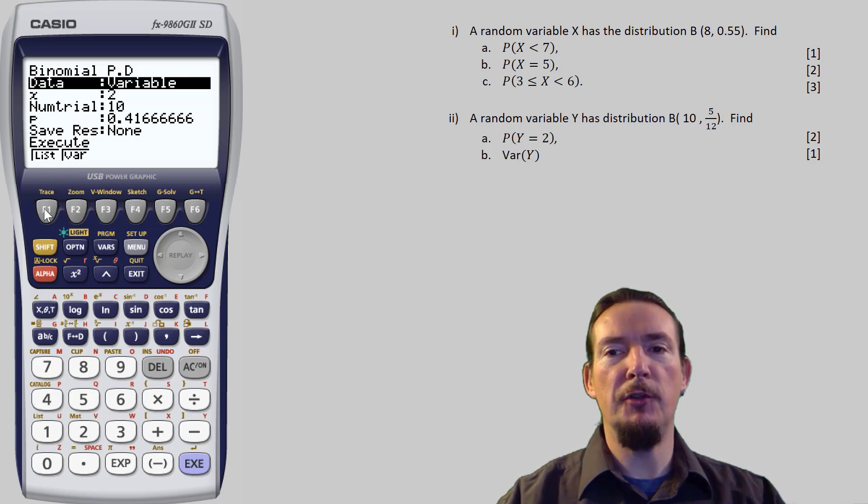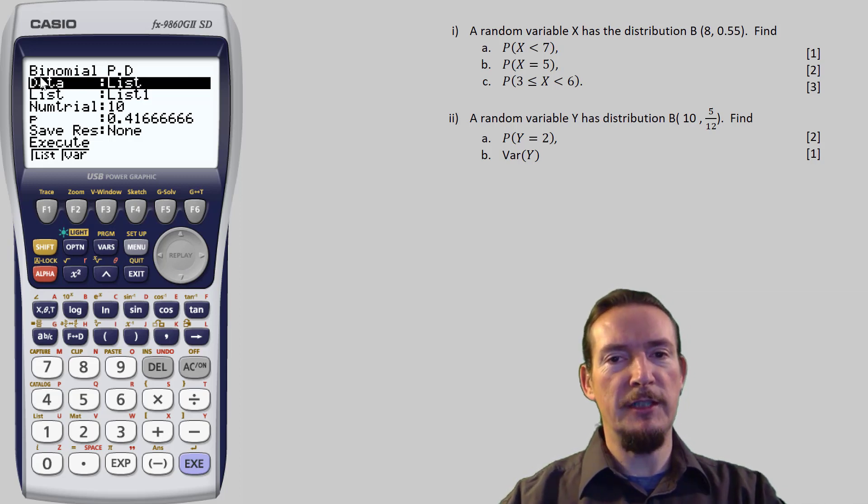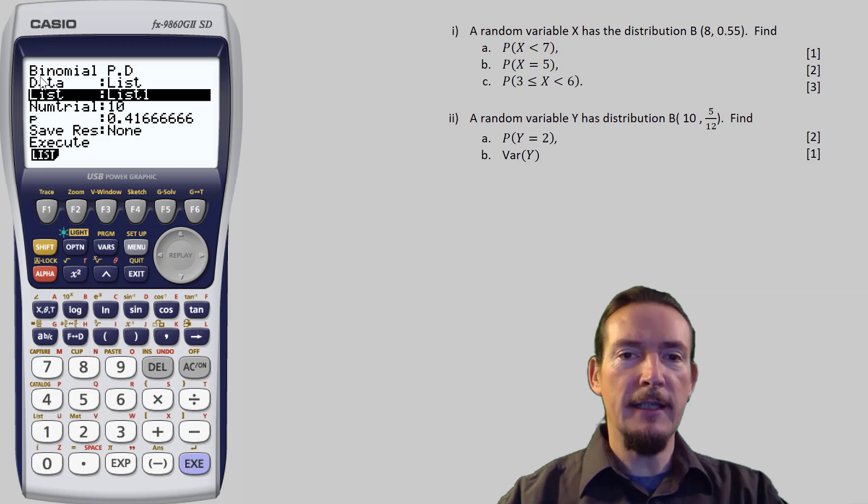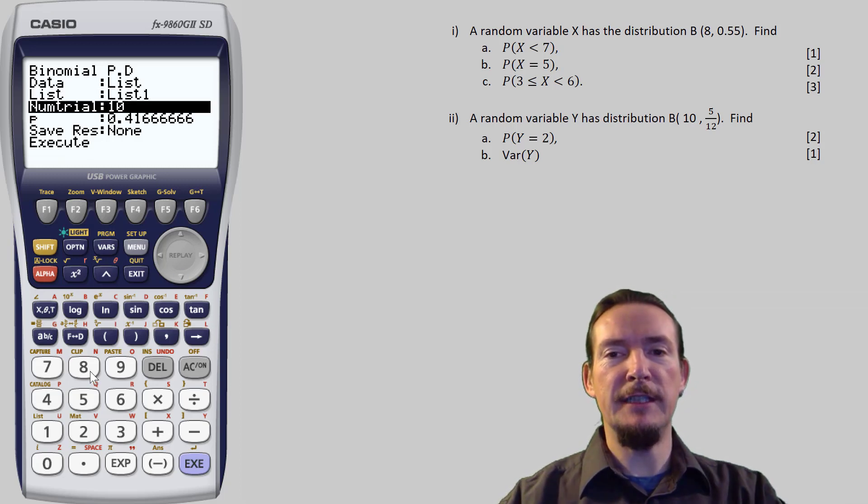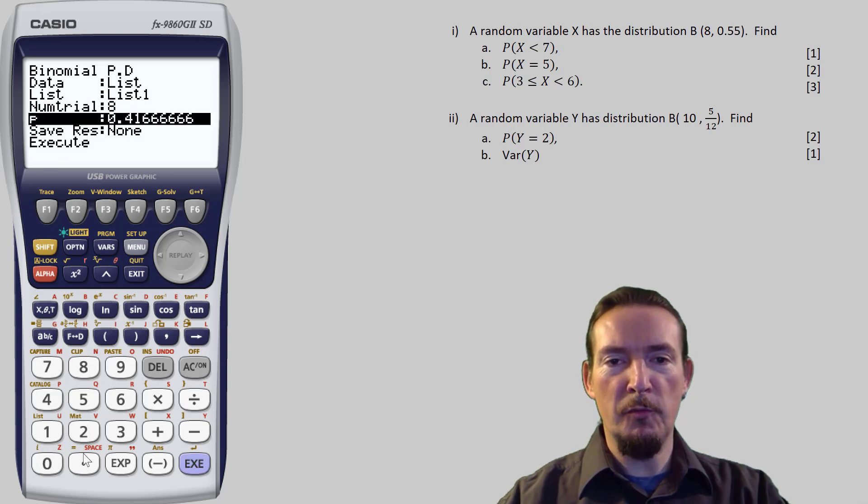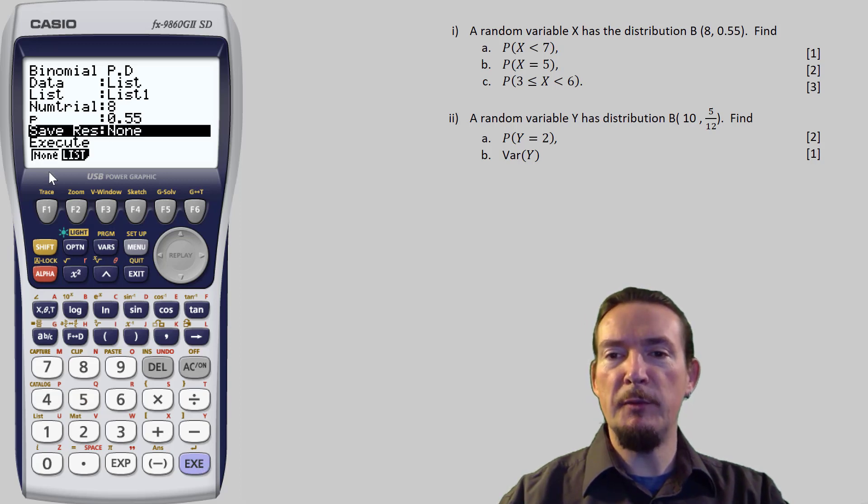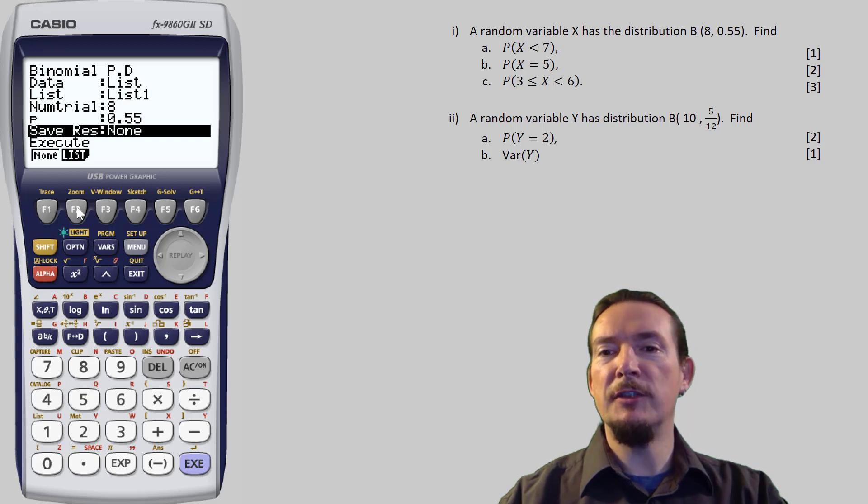I need to configure this table using the distribution's parameters and tell the calculator where to output the values. First of all, it's asking where the values of x are coming from. I can choose either list or one particular value of x. Now, I want to generate the entire distribution, so I'm going to pick the list. Next, I specify which list contains the input values, which is list 1. Next, I enter the numbers of trials N, which is 8, and the probability of success P, which is 0.55. Save results refers to where we want to post the output values. I'm going to tell the calculator to post these to list 2.